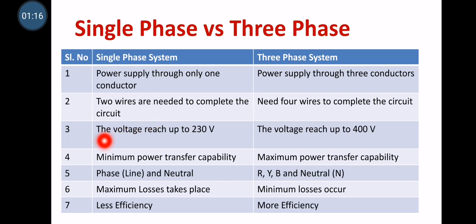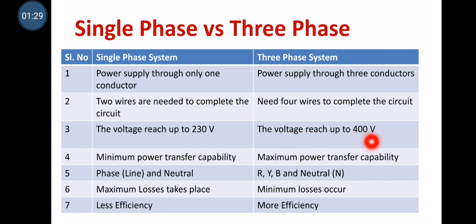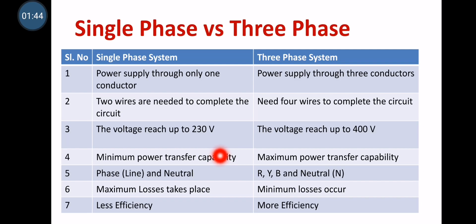Moving on to the third difference. The voltage is reaching up to 230V — the maximum voltage is 230V plus or minus 10%, where that 10% is the tolerance. But in case of three-phase system, the voltage can reach up to 400V. Another difference: the power transfer capability is very limited in single-phase system, so you can't satisfy heavy load requirements. Only light load applications are suitable. If you want to go for heavy load like a three-phase induction motor, we definitely require three-phase system, which ensures maximum power transfer capability.